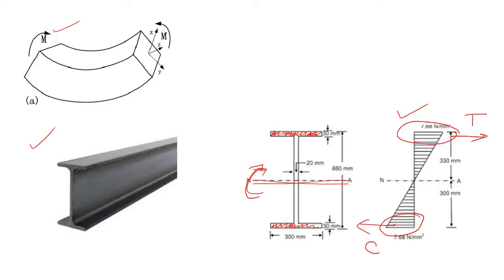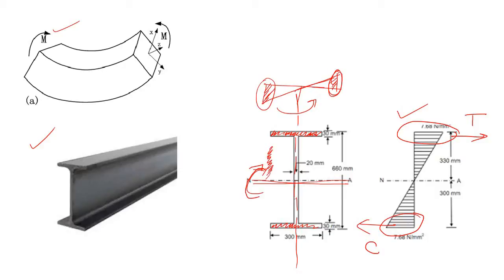Now consider applying a bending moment about the minor axis of the I-section. Due to this minor axis bending, the stress distribution shows resultant tensile and compressive forces, but there is no flange or material available to carry those stresses. So if you apply bending moment about the minor axis of an I-section, that bending moment cannot be carried by that section. We will use this concept to understand the drawback of an I-section column.